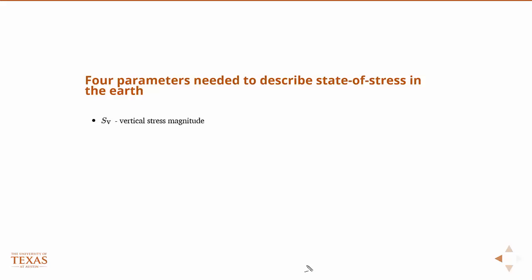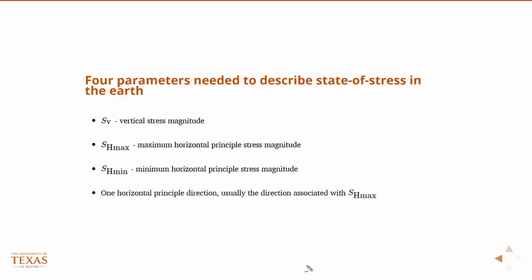The vertical stress magnitude, and again, that one's pretty easy to calculate. It's just the overburden pressure, one psi per square foot, roughly. We need one of the horizontal principal stresses. We typically call that SH max. So, that's the maximum horizontal principal stress. SH min is the minimum horizontal principal stress. And one horizontal principal direction, usually the direction associated with SH max. But it doesn't really matter. If we know either one of them, we can find the other one.